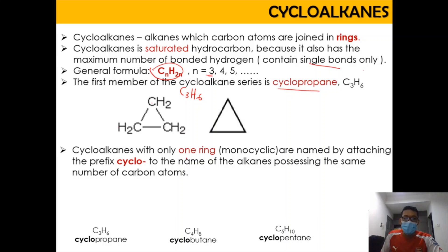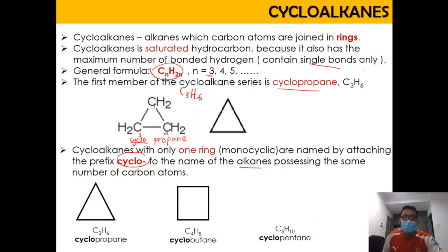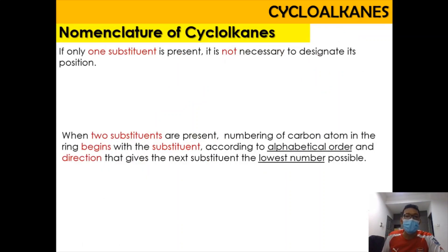Cyclic alkanes with only one ring are named by attaching the prefix 'cyclo' to the name of the alkane possessing the same number of carbon atoms. So if a cyclic alkane has three carbons, the name is the same as propane — you just add 'cyclo' to get cyclopropane. Four carbons gives cyclobutane, and five carbons gives cyclopentane.